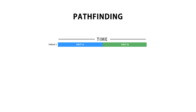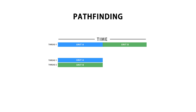For example, if you have pathfinding for your units, in single-threaded code you first calculate the path for the first unit, then when that's done you calculate the path for the second unit, and so on. Whereas with multi-threaded code you can calculate many paths at the same time depending on the number of cores. So if you have a lot of small independent tasks running in your game, you can massively increase your performance.